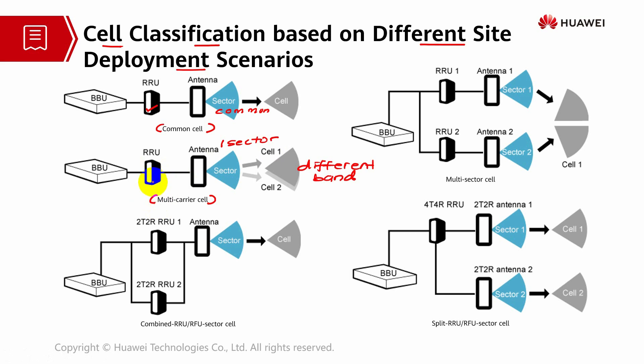Before establishing the multi-carrier cell, you have to ensure that the RRUs, RFUs, and CPRI ports have the capabilities required for the multi-carrier cell.